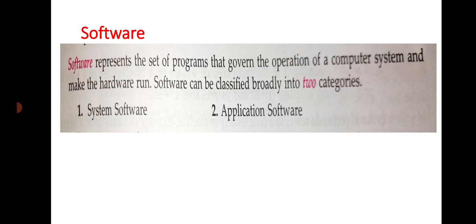Software can be classified broadly into two categories. First one is system software and second one is application software. These are the programs or set of instructions which are used to perform any task in your computer system.